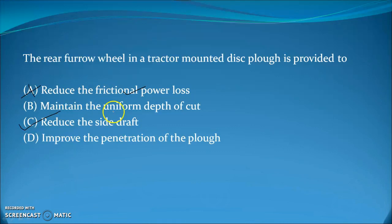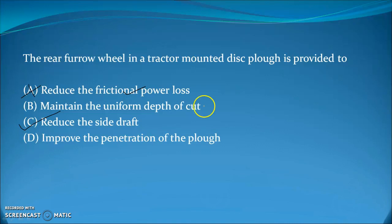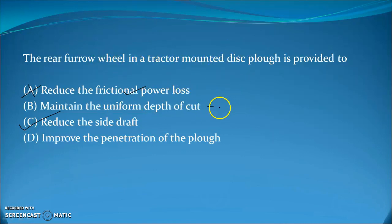The next option — to maintain uniform depth of cut — is also not correct. For a tractor-mounted plow, depth of cut is controlled either by the tractor hydraulic system through automatic depth and draft control, or by a gauge wheel. Since this is a tractor-mounted implement, depth is taken by the automatic depth and draft control, so that is not the answer.